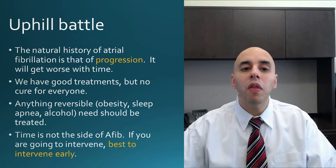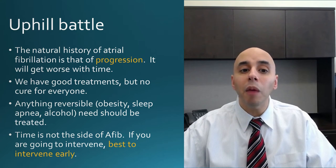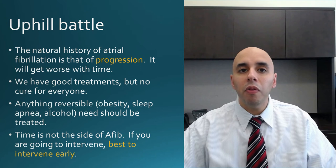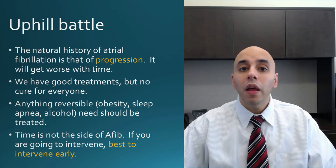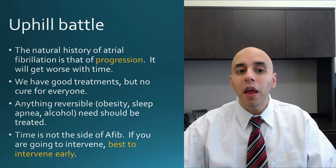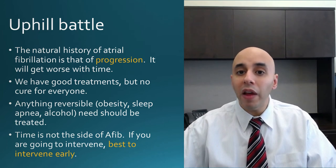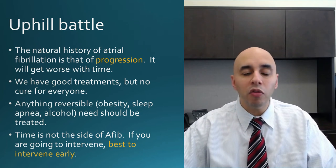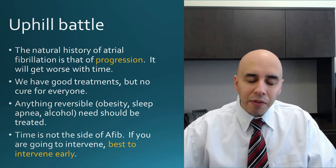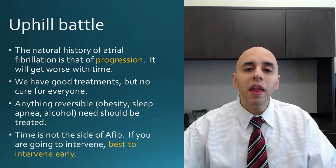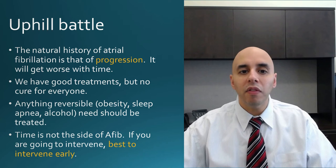Because of this, the battle to keep someone in normal rhythm is an uphill battle. If there's anything you can do to slow down the progression, you ought to do it. The big reversible factors include losing weight if overweight, treating sleep apnea, and avoiding alcohol or caffeine. We also look at heart valves, since a leaky or tight valve can lead to atrial fibrillation. The biggest driver for atrial fibrillation is atrial fibrillation itself, so being aggressive early on can prevent remodeling. If you wait until the heart has already remodeled, your chance of success diminishes significantly.